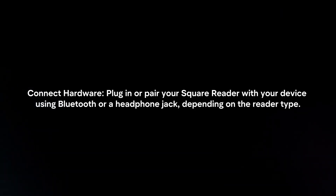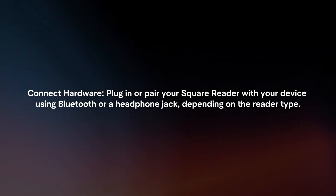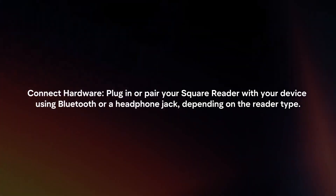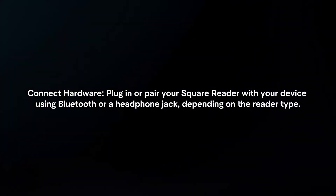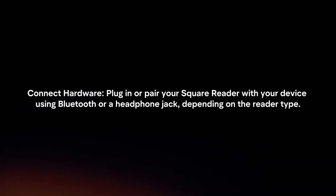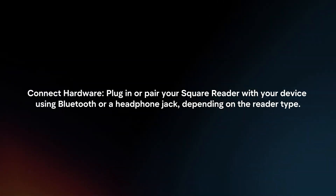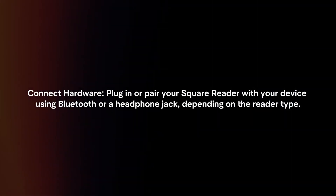Connect hardware. Plug in or pair your Square reader with your device using Bluetooth or a headphone jack, depending on the reader type.